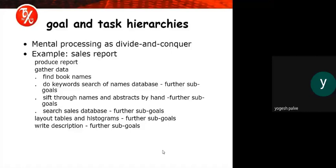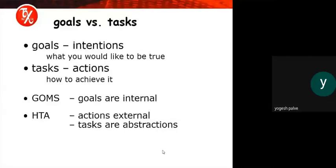Whenever we are finding the book name, first we have to search in the name database — that is a sub-goal. Our main goal is to find the name of the book, then find the particular name, which becomes a sub-goal. Then sift through names and abstract by hand is again a sub-goal. This is the best example of goals and task hierarchies — a hierarchical structure where we apply the divide and conquer rule.